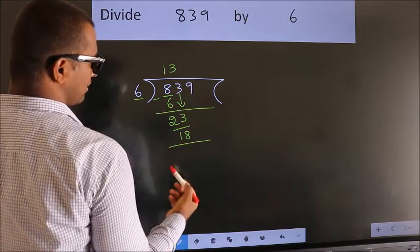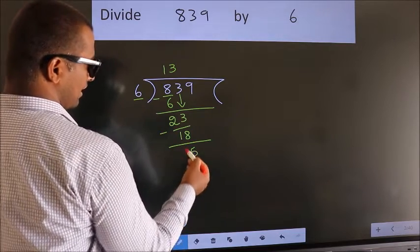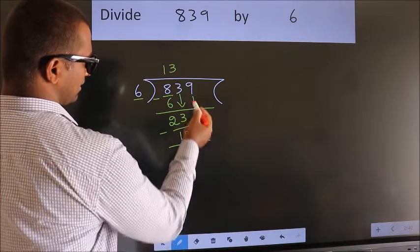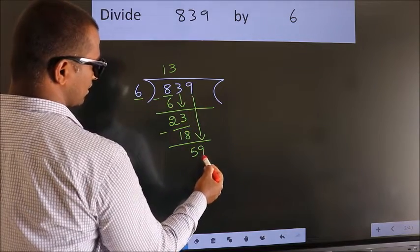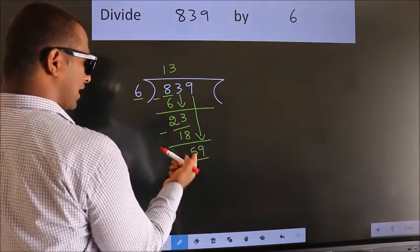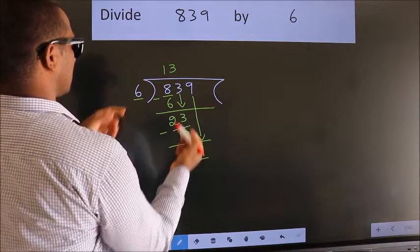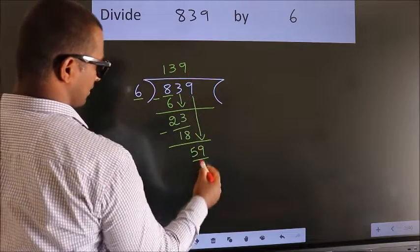Now we subtract, we get 5. After this, bring down the next number, so 9 down, so 59. A number close to 59 in the 6 table is 6 nines 54.